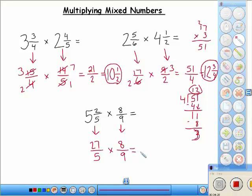So let's see if we can cross-cancel. 5 and 8. Does anything go into 5 and 8? Nope. What about 9 and 27? Yeah, both of those can be divided by 9. So 9 divided by 9 is 1. 27 divided by 9 is 3. So now we can multiply. 3 times 8, 24. 5 times 1, 5.